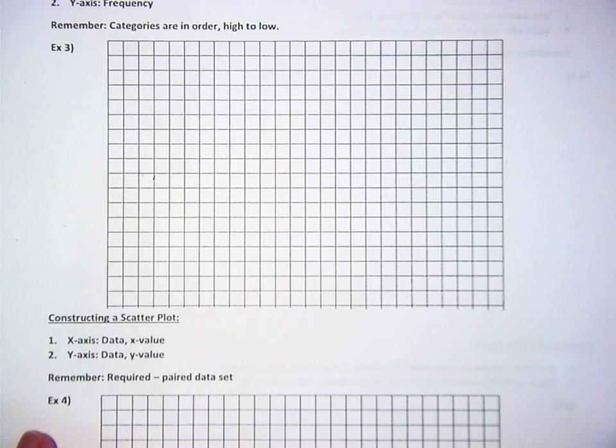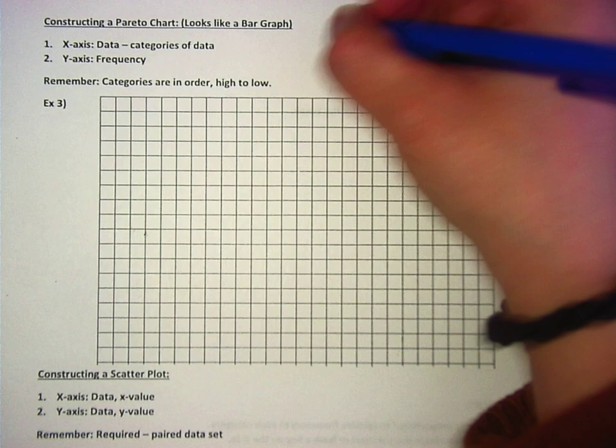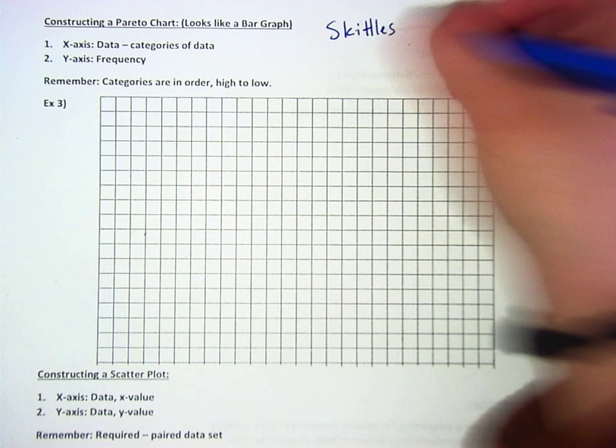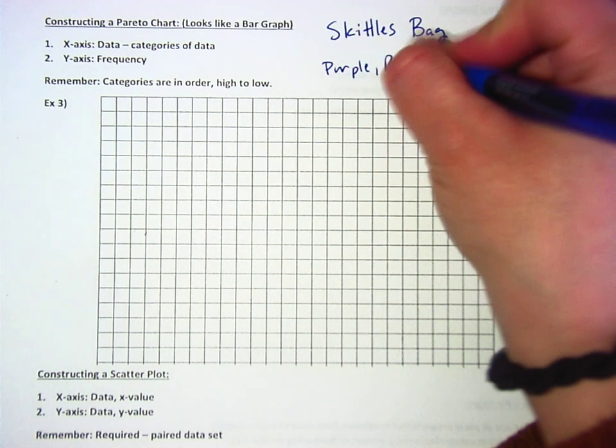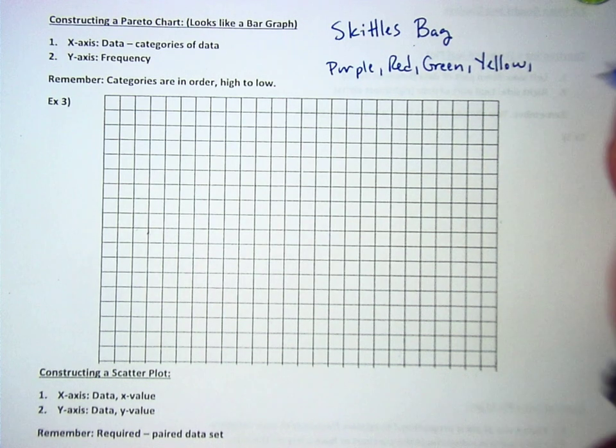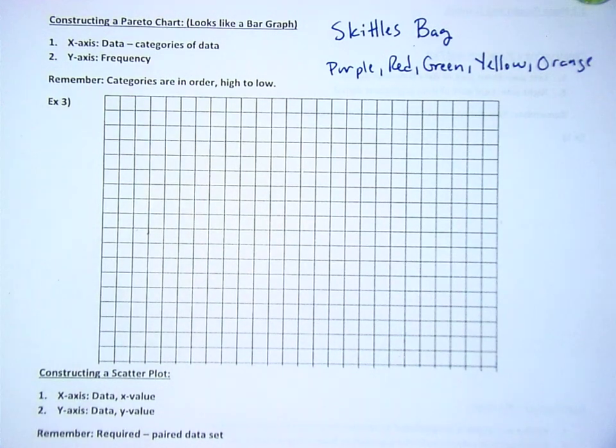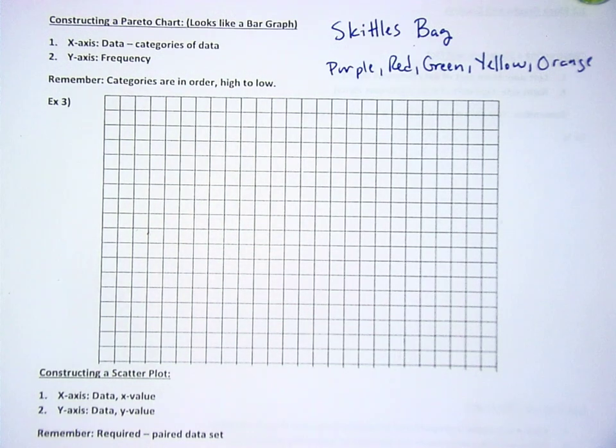Example three. All right, Justin, a Pareto chart. Justin, let's say that you opened up a Skittles bag. What are the colors in a Skittles bag? Purple, red, green. What'd you say? Orange? Is that it? Okay, Justin, let's say that you're sharing with all your friends, all your many, many friends. Let's say that you've got 12 friends that you're sharing with. Big day.